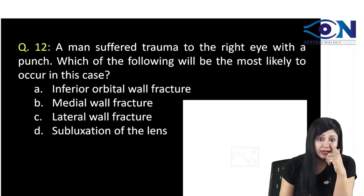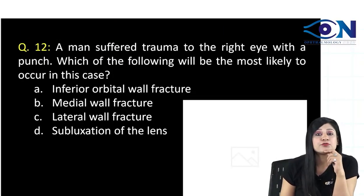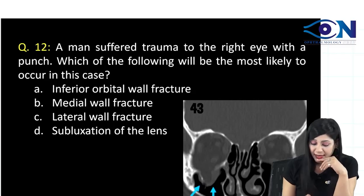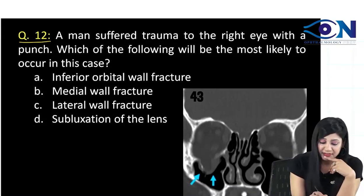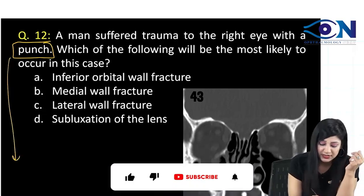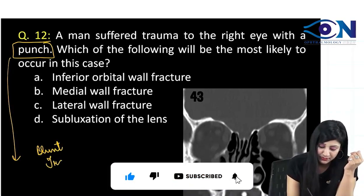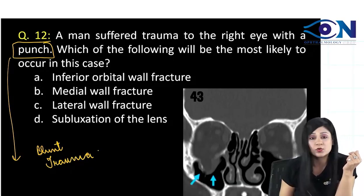Coming to the next one: a man is suffering from trauma to the right eye with a punch. Punch injury means it is a case of blunt trauma. Which of the following is most likely to occur?